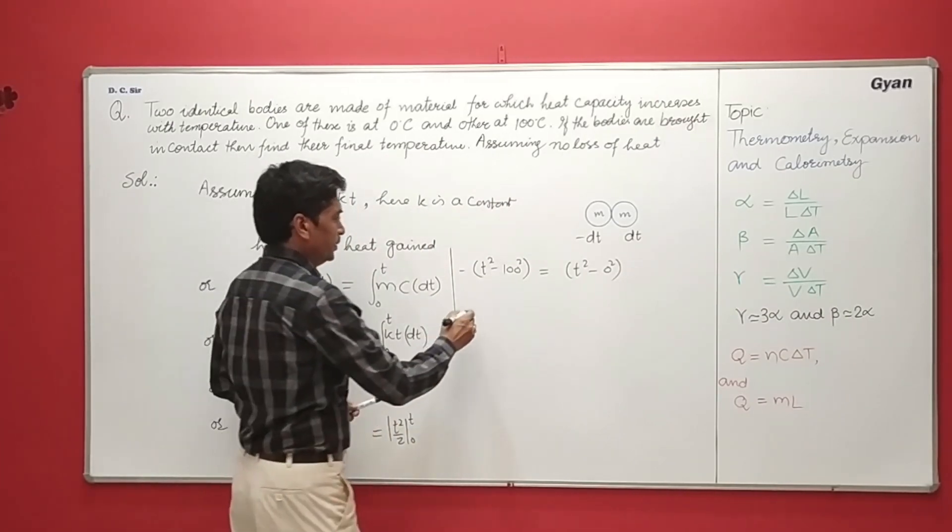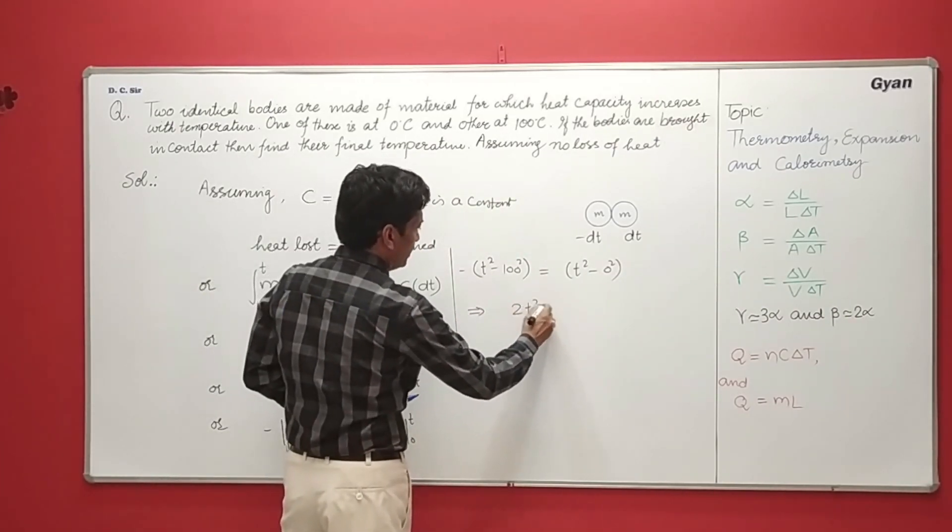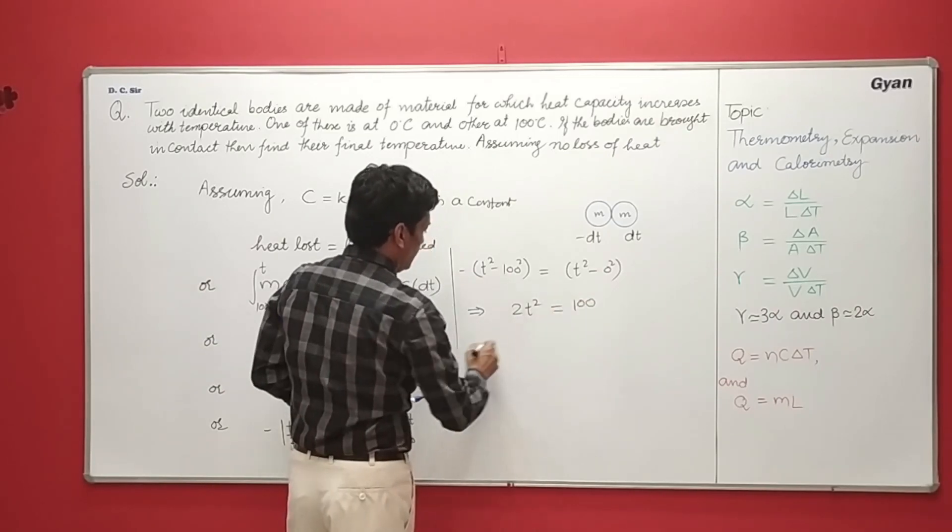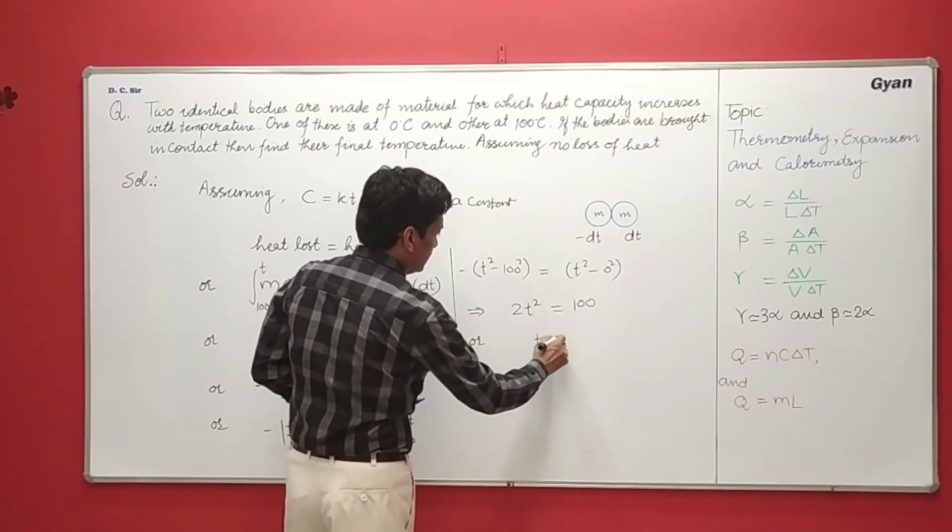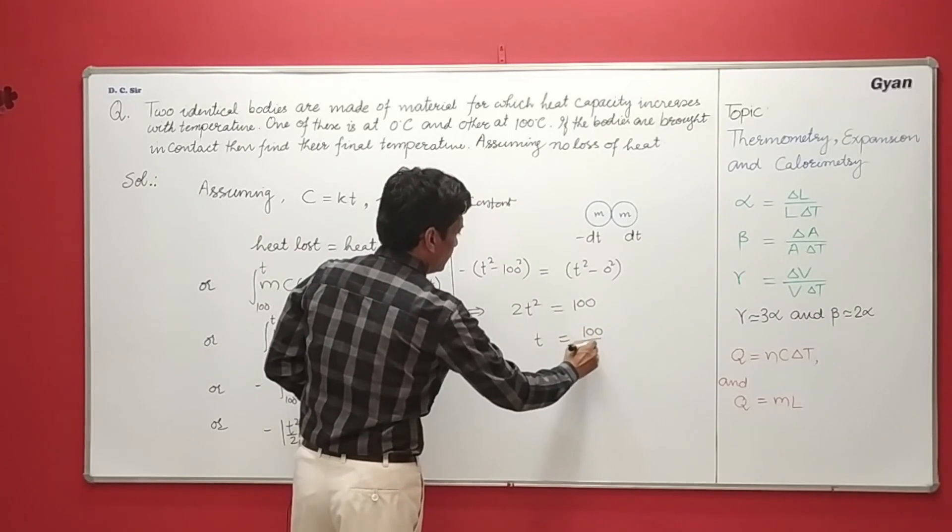Now I am simplifying, we have 2T square is equal to 10000 or T is equal to 100 upon root 2.